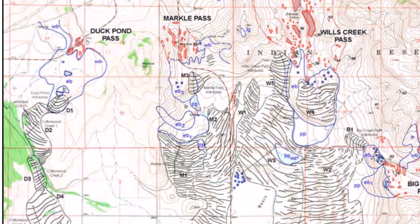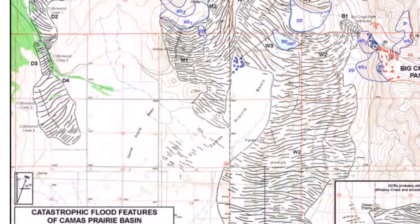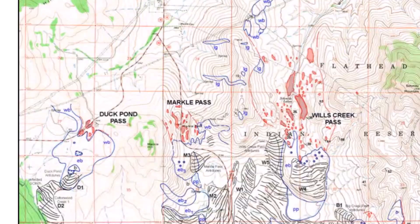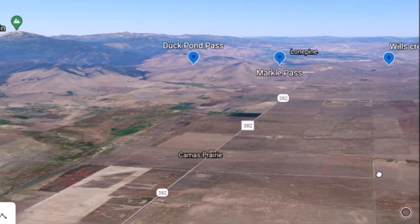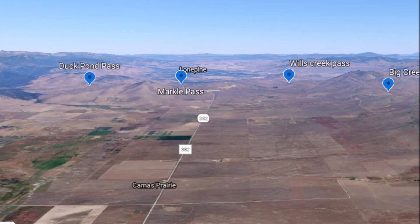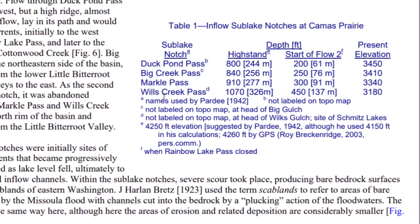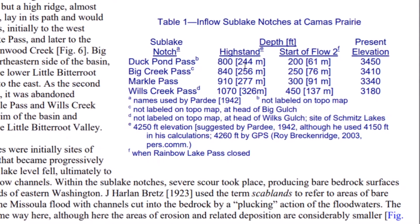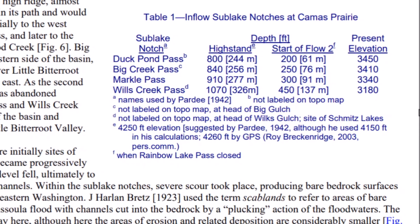Here they are mapped out over this whole area. There are similar flood features in the Altai Mountains in Siberia — I did a video on that place during the shutdown. It appears these flood events happened in different areas of the world, opposite sides of the world, at the exact same time. Here in Camas Prairie, Big Creek Pass, Wills Creek Pass, Markle Pass, and Duck Pond Pass all have different elevations for the height of the water. The different depths at the high stand were between 800 and 1,070 feet deep — between 244 and 326 meters deep. Good grief, what happened back then?